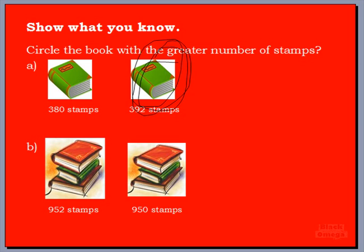Let's look at the next one. Which one has the greater number of stamps? We have two books here — one has nine hundred and fifty-two stamps and the other has nine hundred and fifty stamps. Let's look at our place value. Both books have nine hundreds. Now let's look at our tens — are they the same or different? That's right, they are the same. They both have five tens.